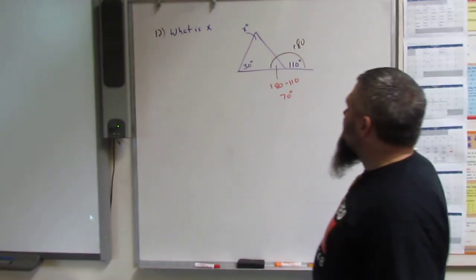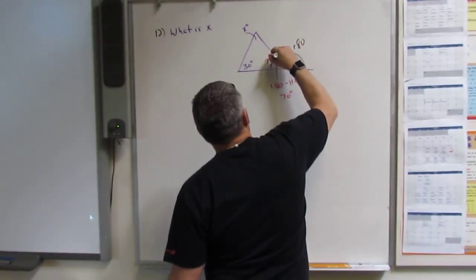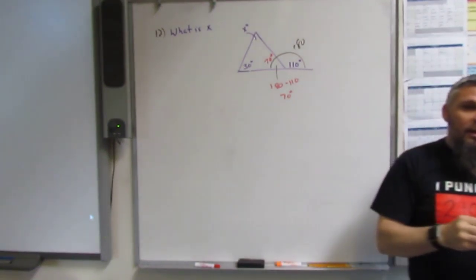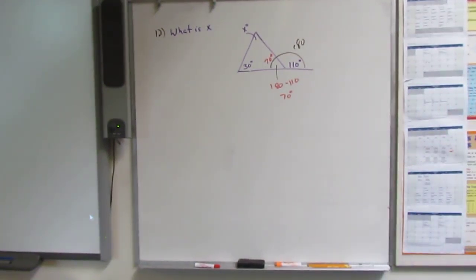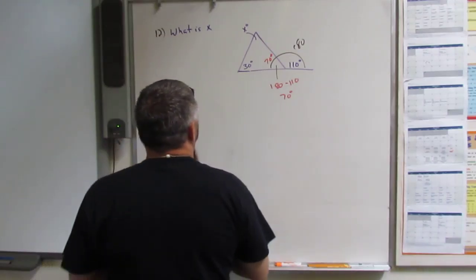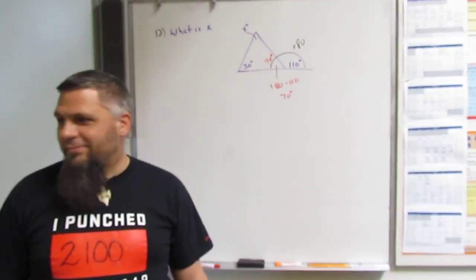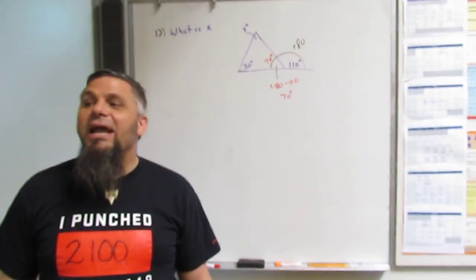Okay? So if this is 70, and this is 30, then how much is X? And how did you get 80? I don't know. Is it 40 or 80? It's 80.